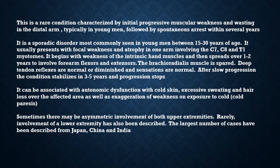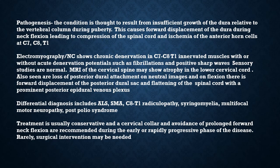Rarely, involvement of a lower extremity has been described. The largest number of cases have been described from Japan, China, and India. Regarding pathogenesis, the condition is thought to result from insufficient growth of the dura relative to the vertebral column during puberty, causing forward displacement of the dura during neck flexion, leading to compression of the spinal cord and ischemia of the anterior horn cells.